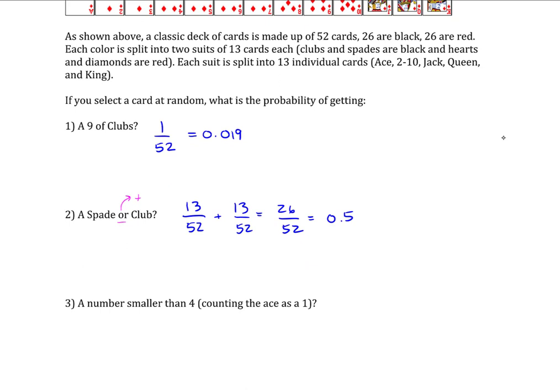A number smaller than four, counting the ace as a one. So sometimes the ace is counted as a one, sometimes it's counted as higher than a king, sometimes it's not counted as anything. It just depends. In this particular case, it's defined as a one.